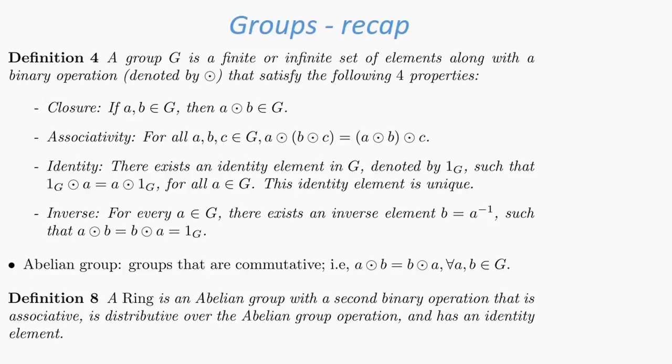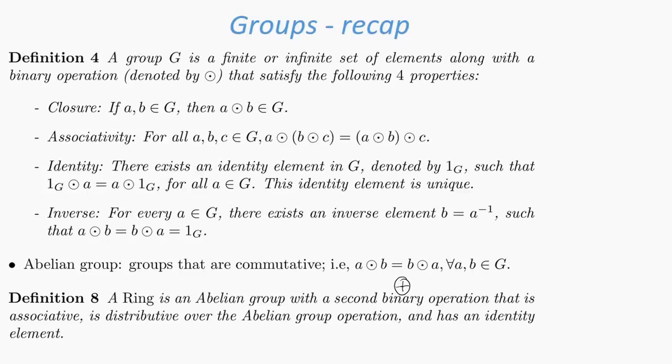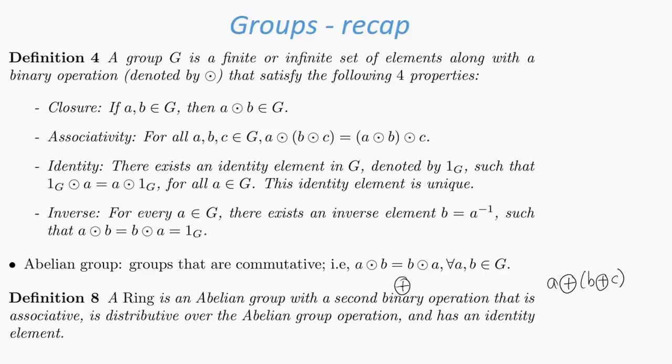So, for example, if the second binary operation is denoted by ⊕, then associativity simply means that a ⊕ (b ⊕ c) = (a ⊕ b) ⊕ c.